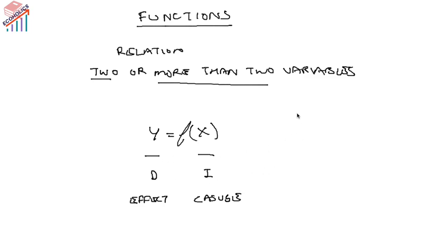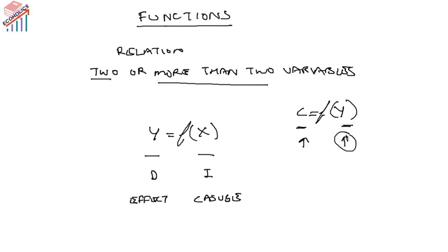The independent variable can be referred to as the cause and the dependent variable as the effect. For example, consumption is a function of income — consumption is the effect of the cause, which is income. If income rises, your consumption will also go up. Apart from this, the famous demand function is another example.